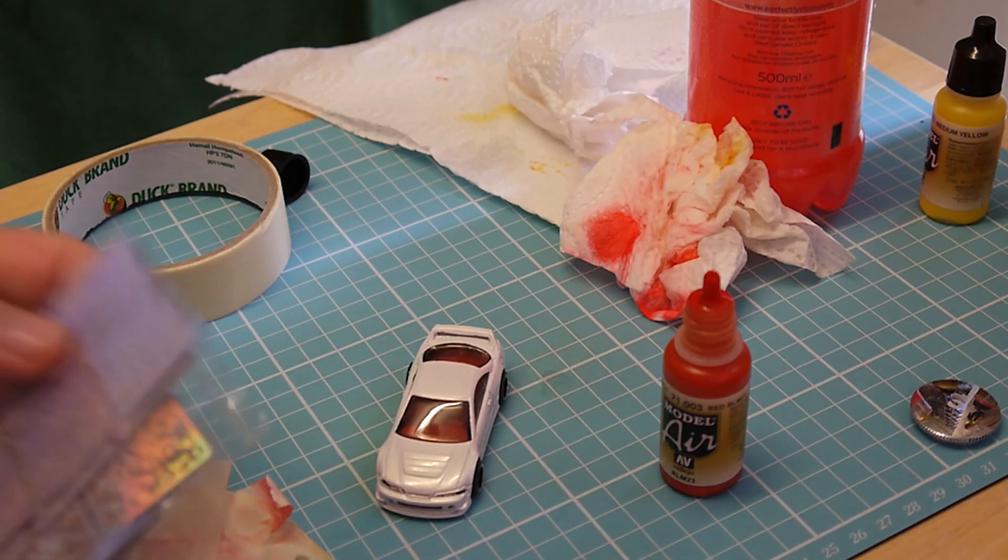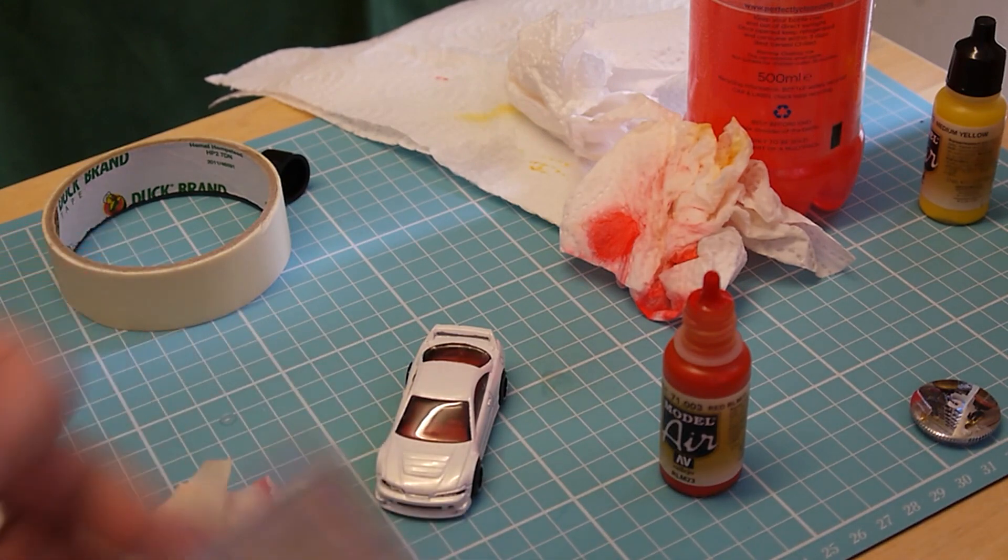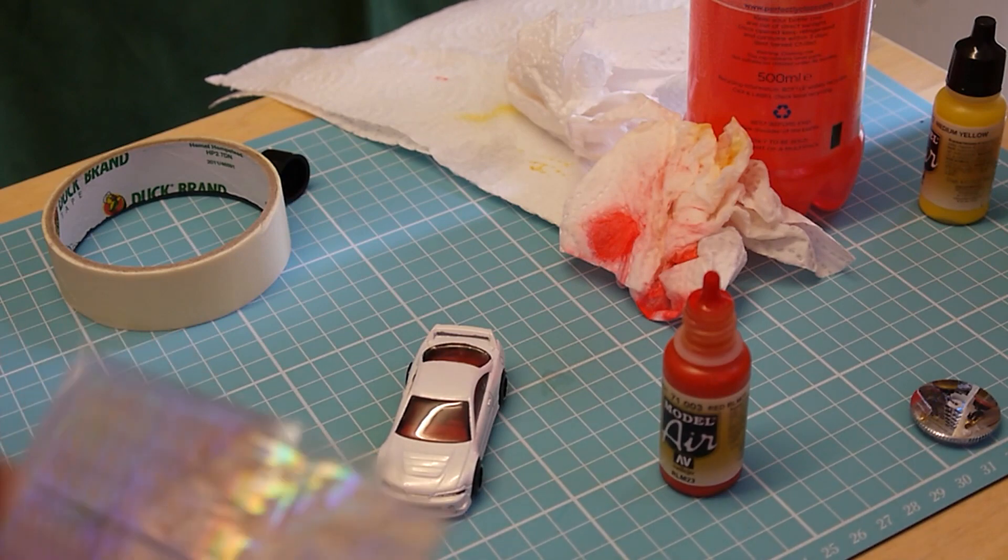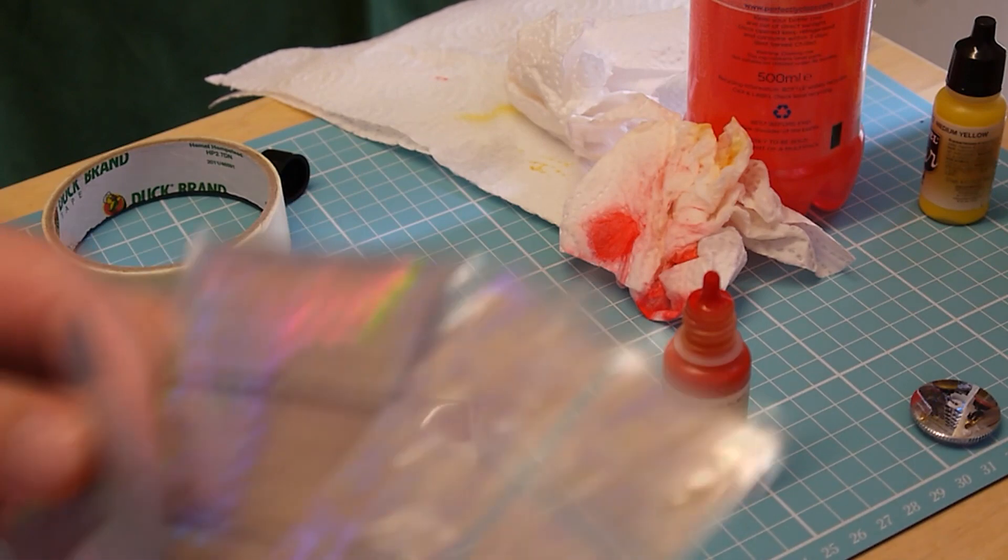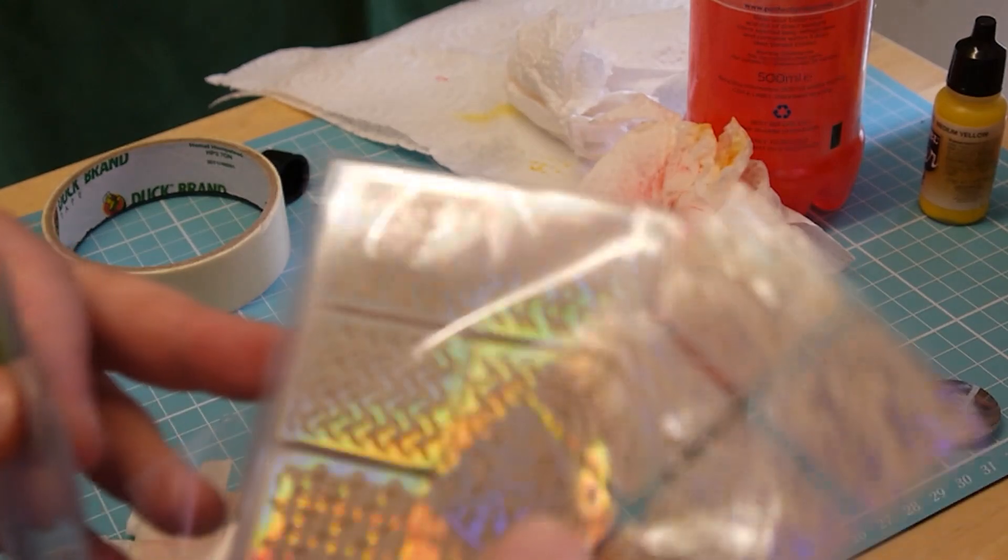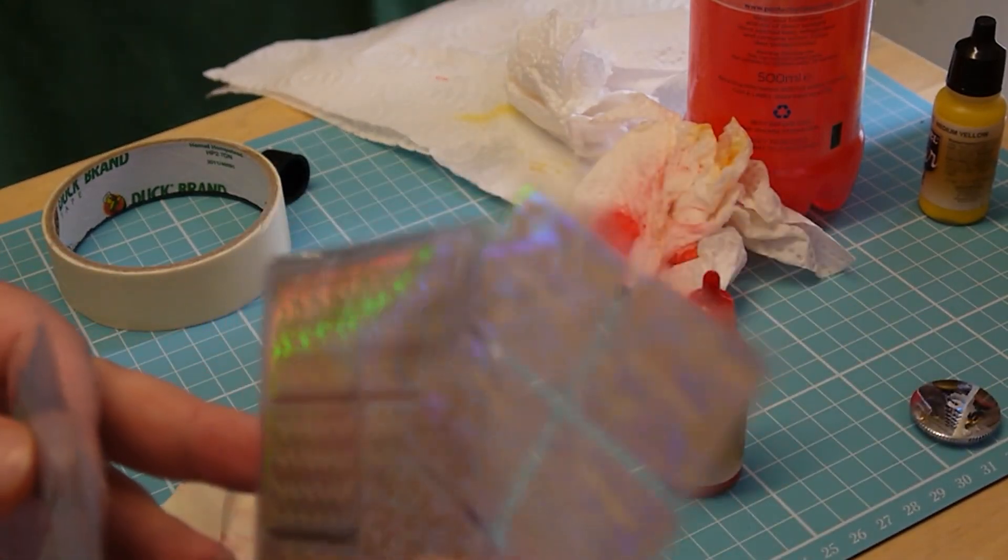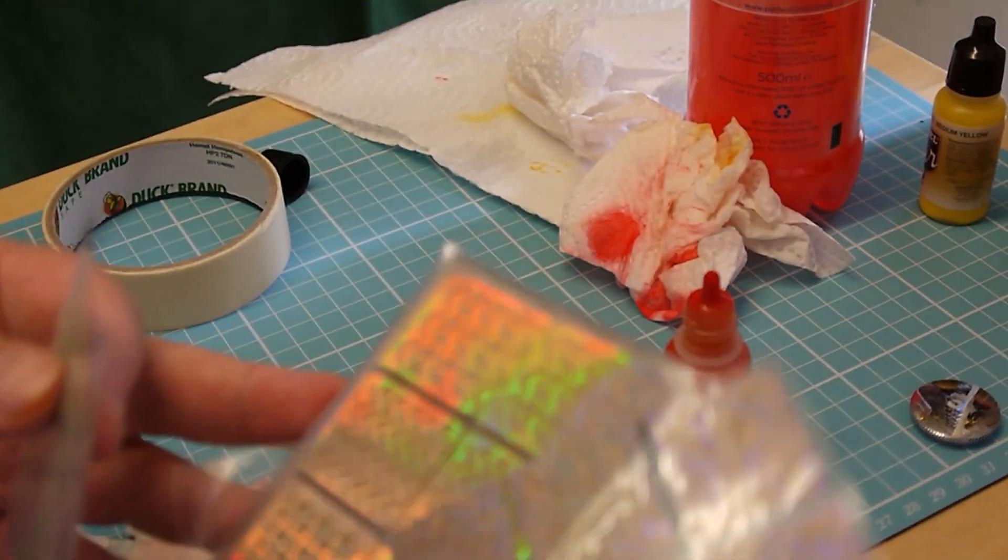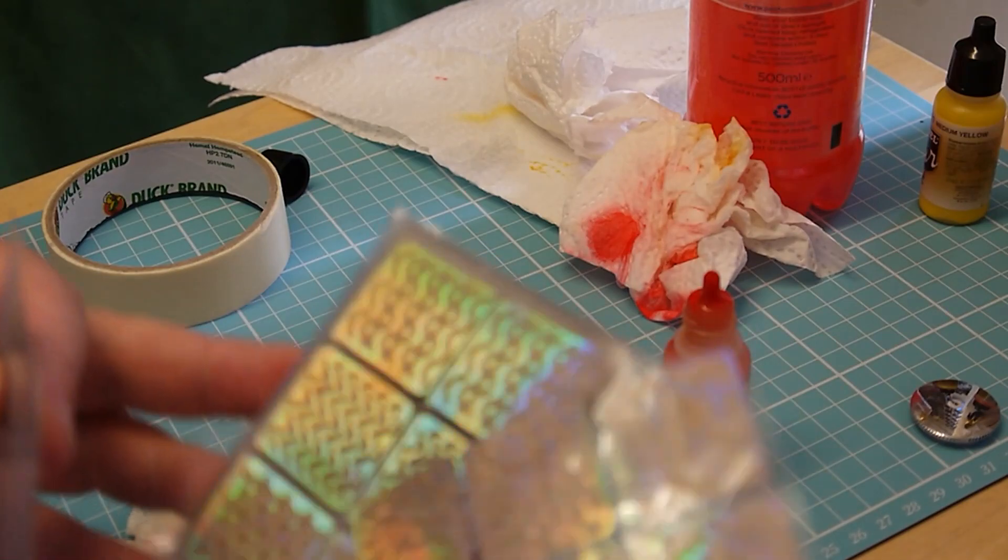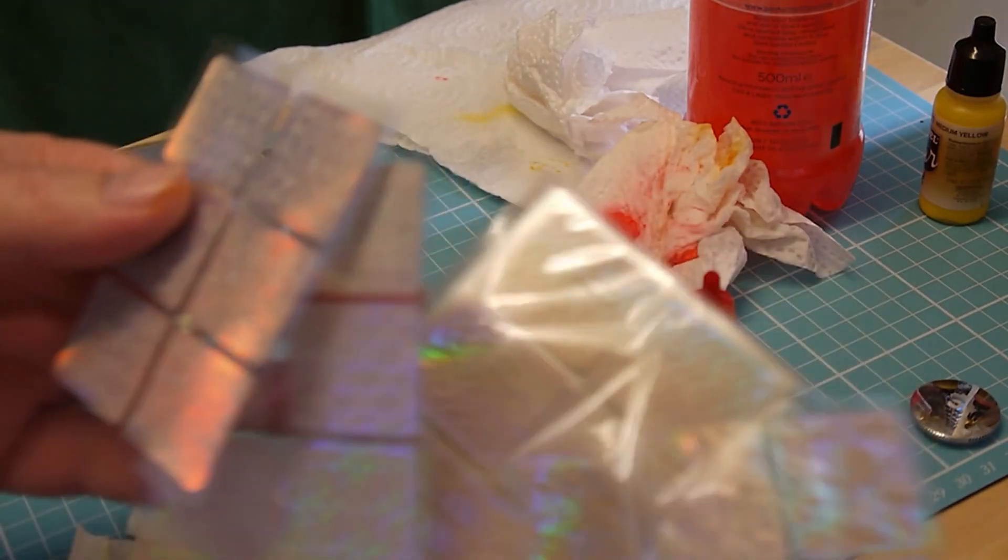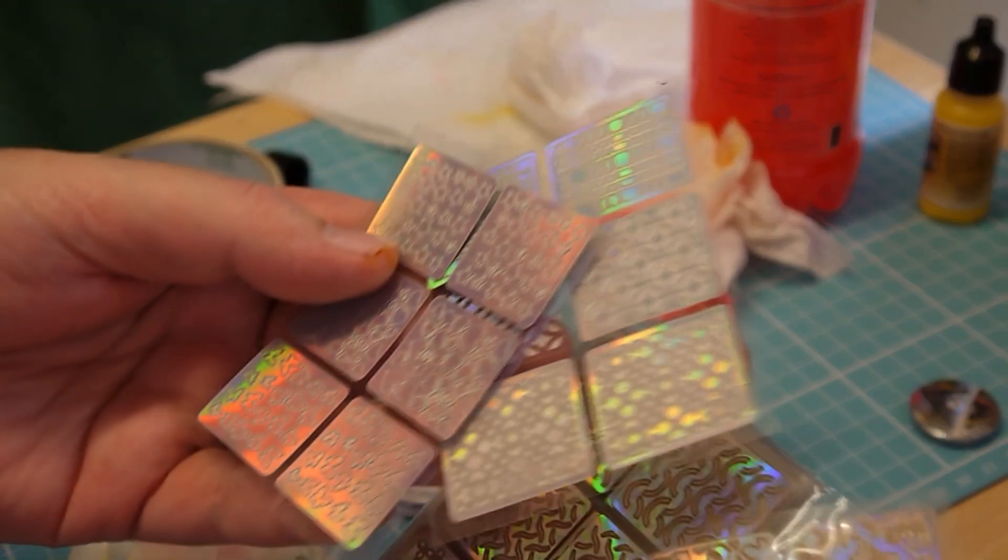Well, here we go, a bit of an experiment on masking for airbrushing. Found some nail stencils, lots of different designs off eBay. It cost me about two pounds for about 50 sheets, some interesting designs, so I'll give it a try and do some masking with an airbrush on a diecast car.